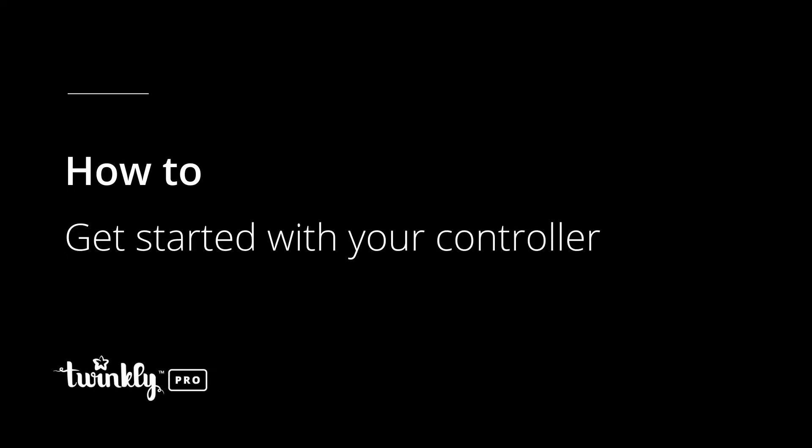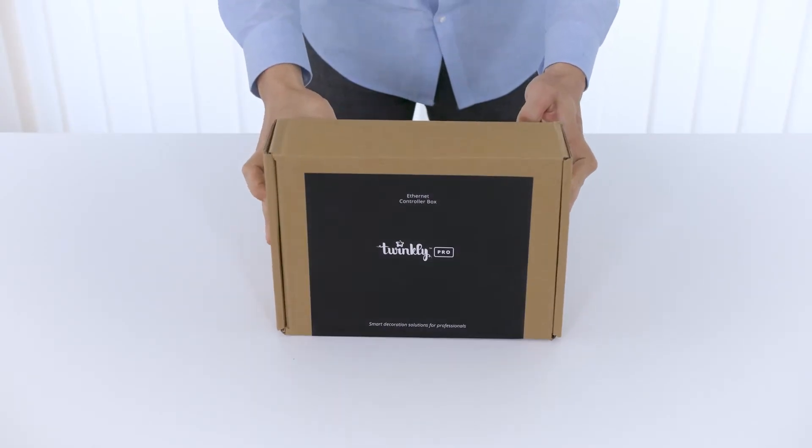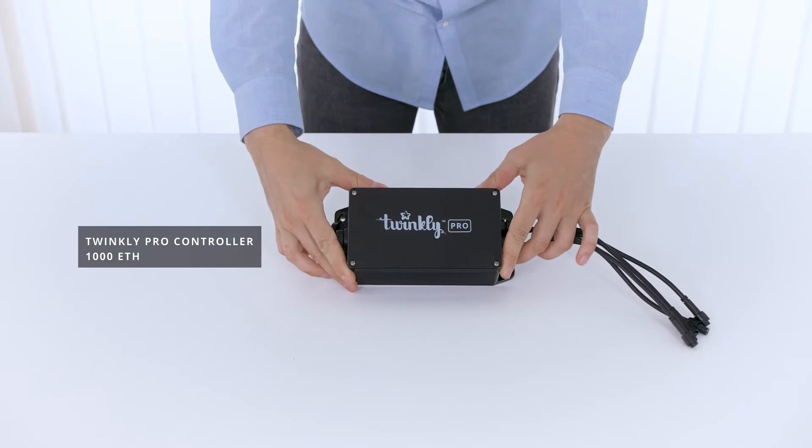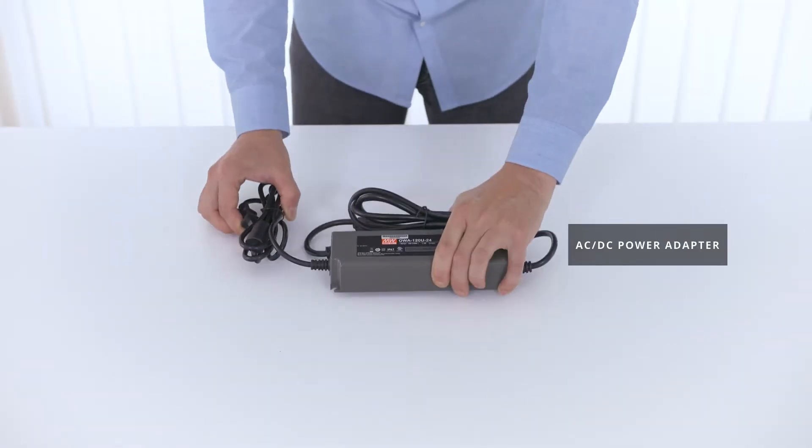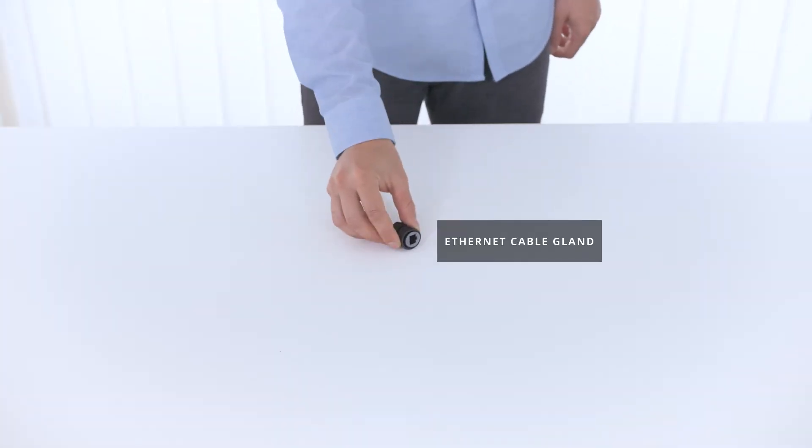In this tutorial we will learn how to set up a single four-port ethernet controller. Inside the box you will find the ethernet controller, an AC power adapter already with the plug installed, and an ethernet cable gland.